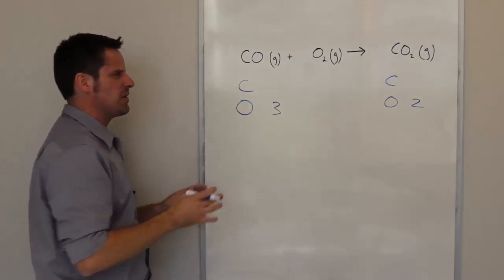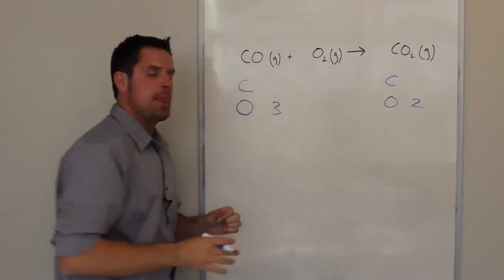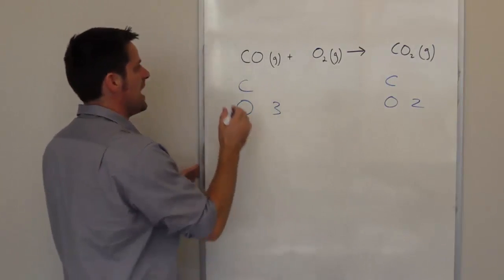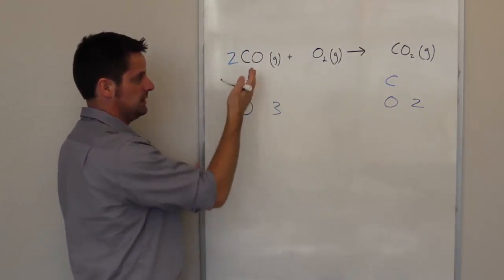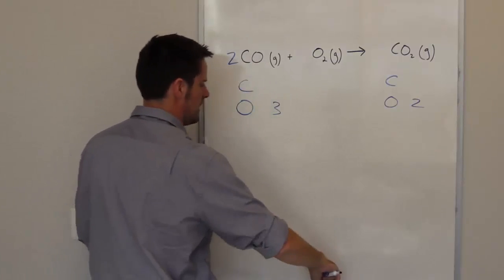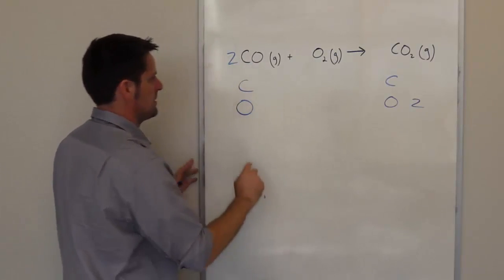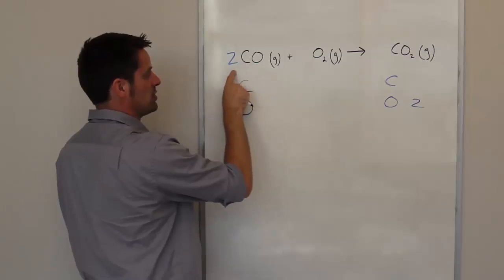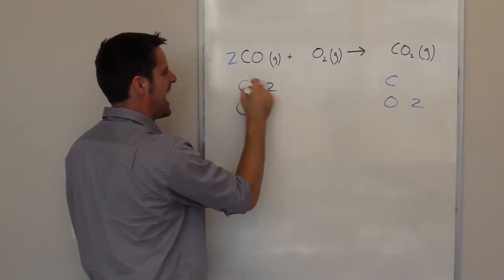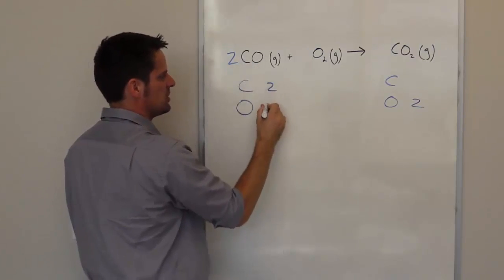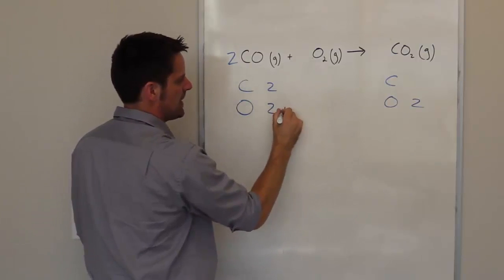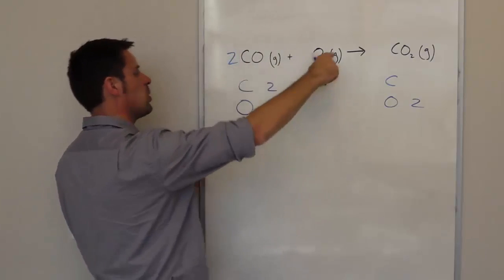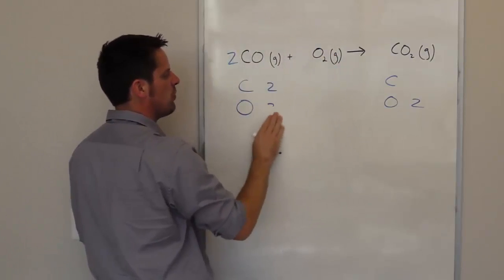Whenever you have that kind of thing where you've got an even and an odd issue, the best way to resolve it is to go ahead and put a two next to whichever substance has the odd number of atoms. So I'm going to go ahead and do that. Now what happens is this. I have two multiplied through, which means I've got two carbon atoms and I have two oxygen atoms. Now when I add these two oxygen atoms here, that gives me a total number of oxygen atoms on the left of four.